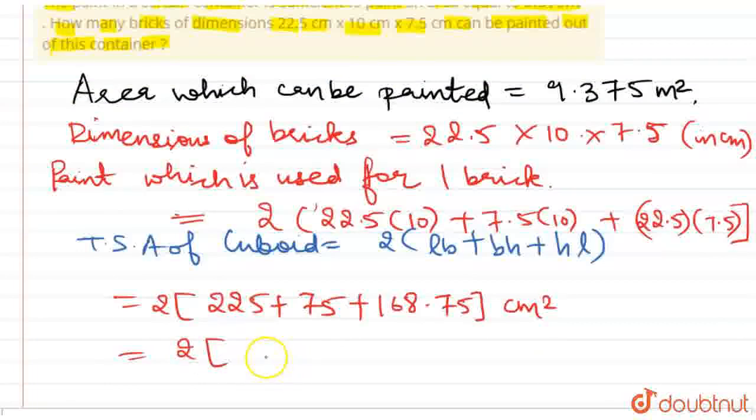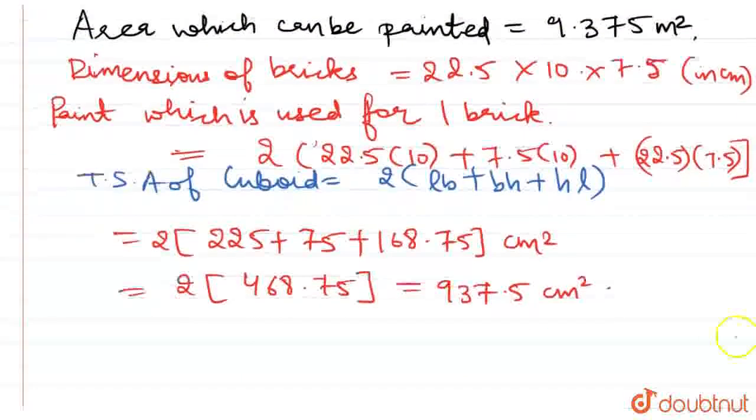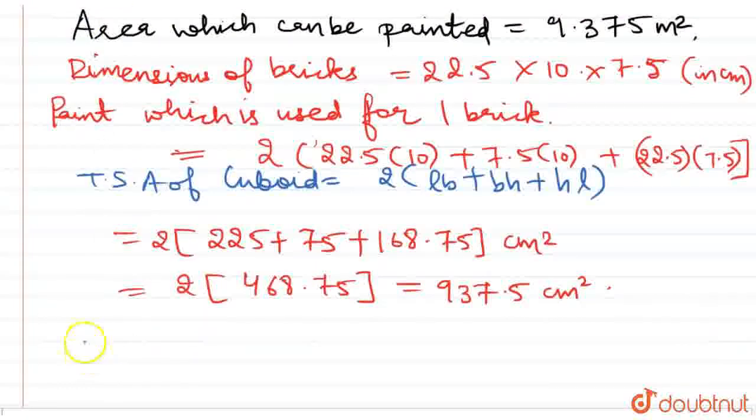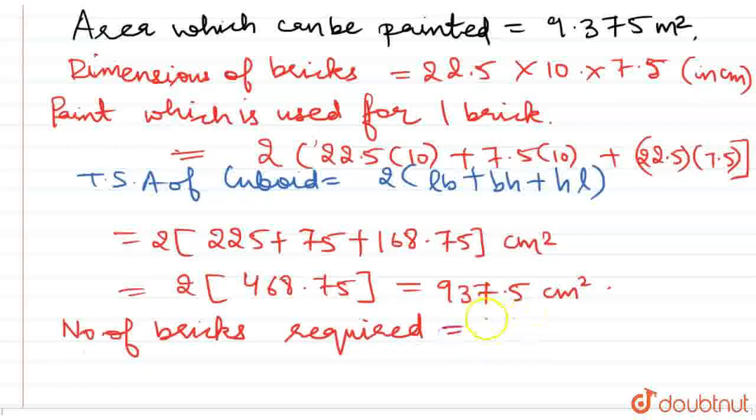That is 300 plus 168, so it is 468.75 which is equal to 2 times that, so this is 937.5 centimeter square. So the number of bricks required will be equal to the total paint which is available upon the paint for one brick.